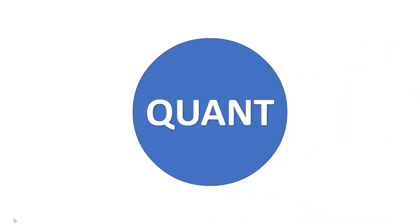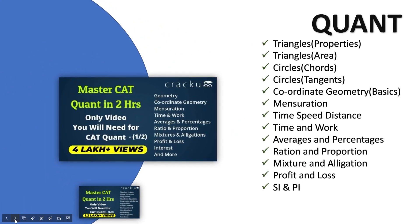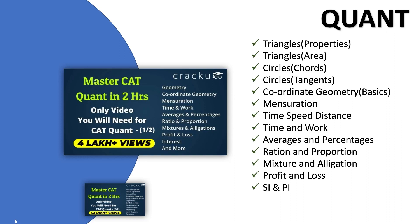Finally, for quant — we have a good number of videos that aspirants can use to cover the key concepts of the quantitative aptitude section of CAT. As we all know, there are many topics in the quant section that aspirants must learn. We have made two excellent videos that cover all key concepts in quant. The first video covers triangle properties, triangle area, circles and quads, circle tangents, time speed distance, time and work, averages and percentages, ratio and proportion, profit and loss, and finally SI and CI.